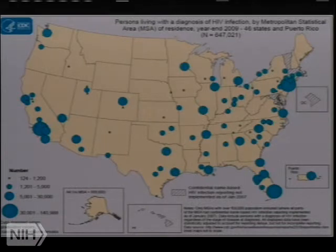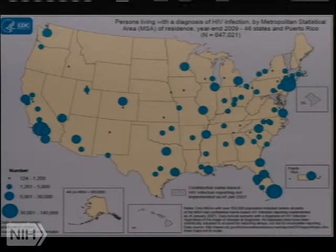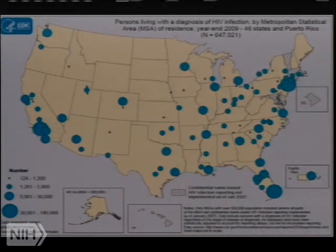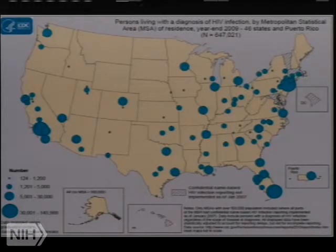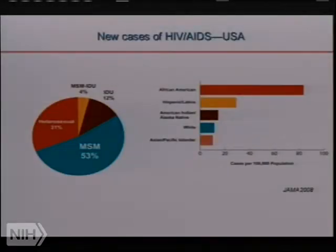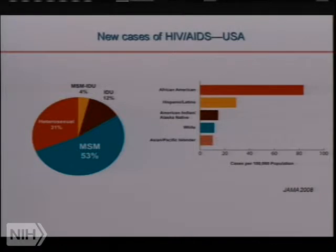This is the US in about 2009, with one of those maps where the size of the circle tells you how many people are actually infected. It illustrates our current issue with HIV — it's not really concentrated in large cities, although we can find it there. No state is immune, but some have more than others. New cases of HIV infection, the incidence, is about 50,000 cases a year, no matter what we do, for the past fifteen to twenty years.